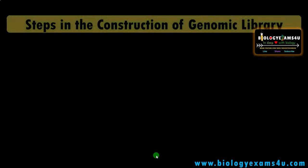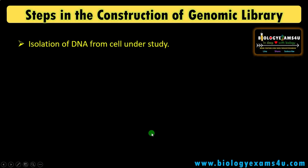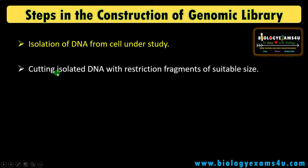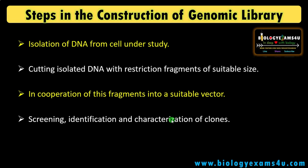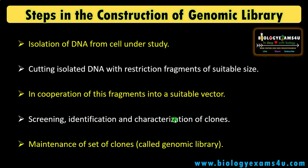Steps in the construction of a genomic library: first, isolate the genomic DNA from the cell under study — virus, bacteria, animals, plant cells, etc. Then cut the isolated DNA using a suitable restriction enzyme into suitable-sized fragments. Then incorporate these fragments into a suitable vector. Screen, identify, and characterize clones after transformation. Finally, the maintenance of this set of clones containing cloned DNA fragments of that particular organism is called the genomic library — the source of our gene of interest.